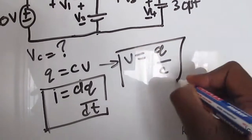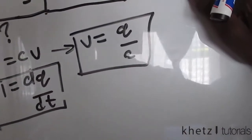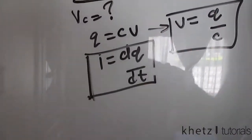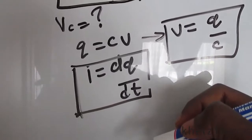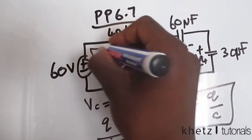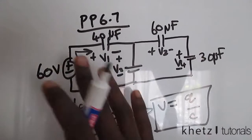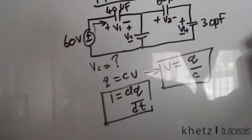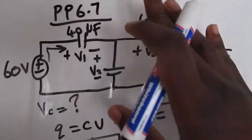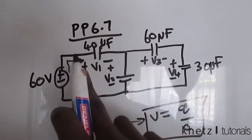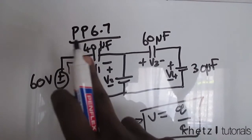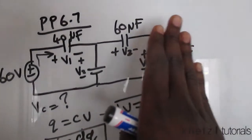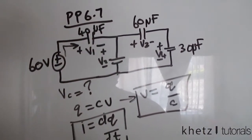This is the main formula we're going to use to find the voltages across each capacitor. Let's proceed to find the total charge, which we view as the current supplied to the rest of the circuit. To do that, we'll combine all capacitors into a single equivalent capacitance, and after that we'll find the charge.